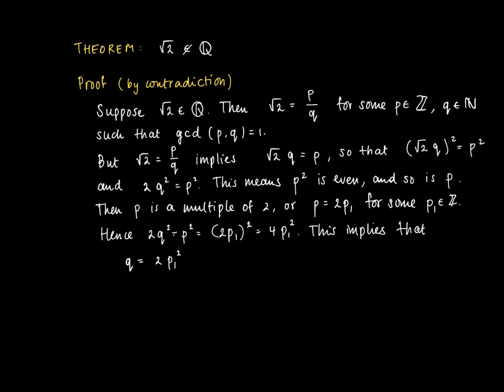Which gives us q squared equals 2p1 squared. So that q squared is even since it's 2 times an integer squared. But this can only mean that q is even. Similar as we concluded for p before, then q is 2 times q1 for some q1, a natural number.